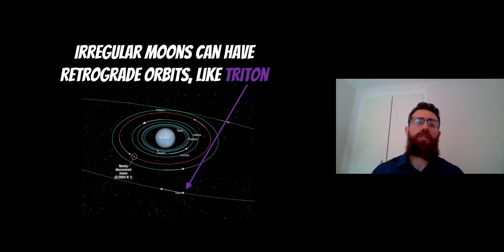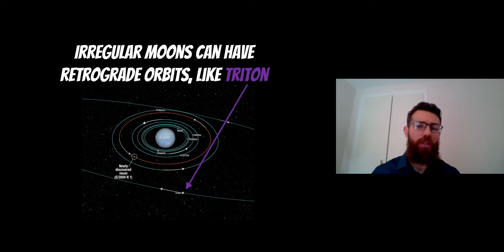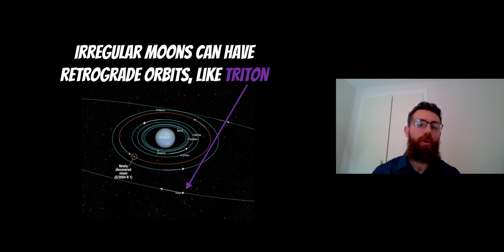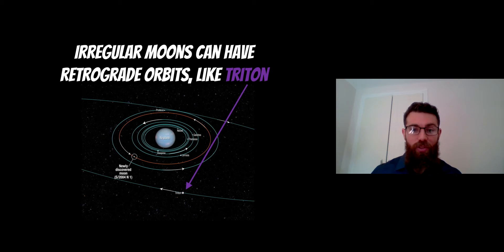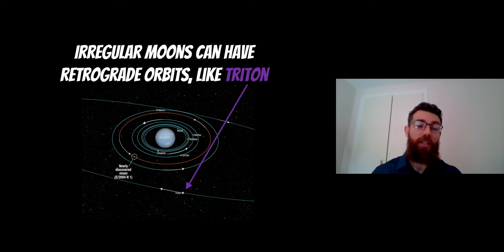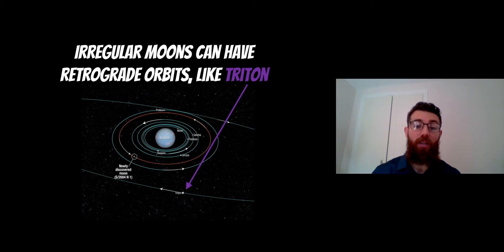Irregular moons are quite the opposite. Probably the best example in our solar system is Triton, the largest irregular moon, which is also a moon of Neptune. If you look at the inner moons of Neptune, they are all orbiting in a common direction — the same direction the planet is rotating. But Triton is actually orbiting in the opposite direction; we call that a retrograde orbit. Regular moons have a prograde orbit, while irregular moons can quite often have a retrograde orbit, meaning they orbit in the opposite direction.